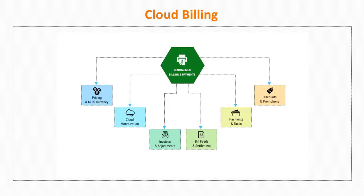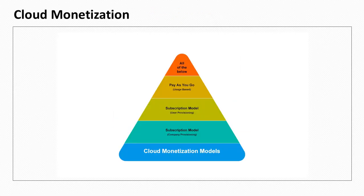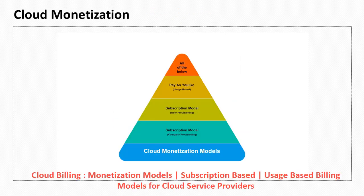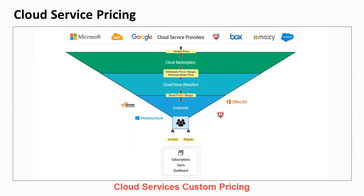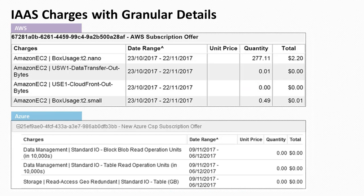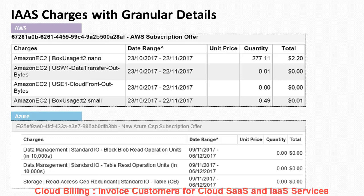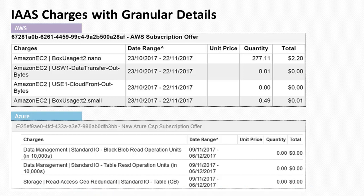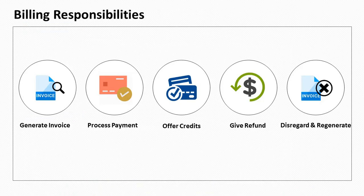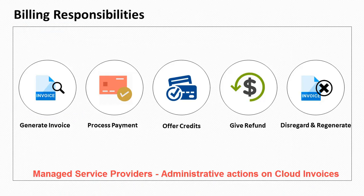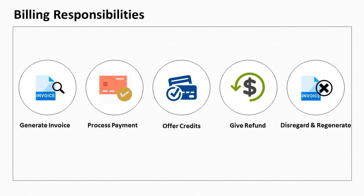Service providers have the major responsibility to monetize cloud offerings with suitable cloud monetization models. They can price services differently from the cloud service providers, bill customers on a specific bill date, charge prorated and recurring fees, bill based on the number of licenses or based on actual usage, and collect statutory taxes.